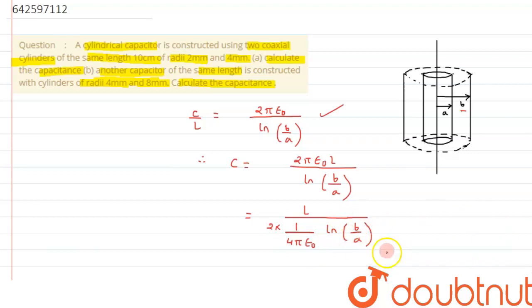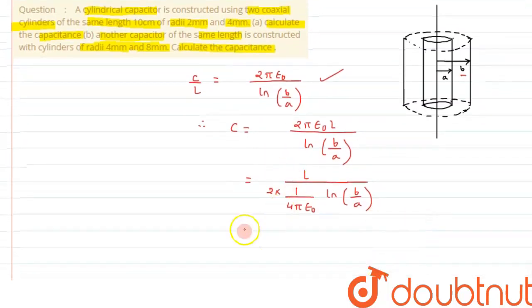From here we can say this can be further resolved. 1 upon 4π epsilon 0 can be substituted as K and its value is 9 into 10 raised to 9.